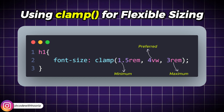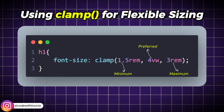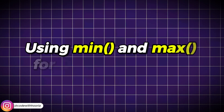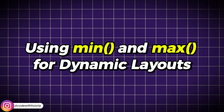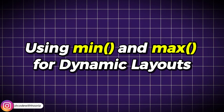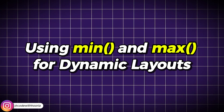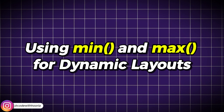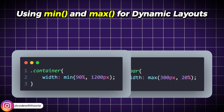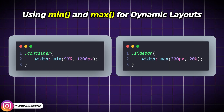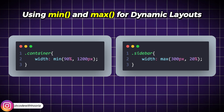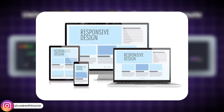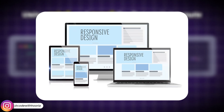This balance allows your text to stay readable and responsive without needing media queries. Next up are min and max — two properties that help you create responsive sizes that automatically adjust based on the screen size. These properties are great for ensuring that elements stay within a comfortable range, whether on small phones or large desktops.